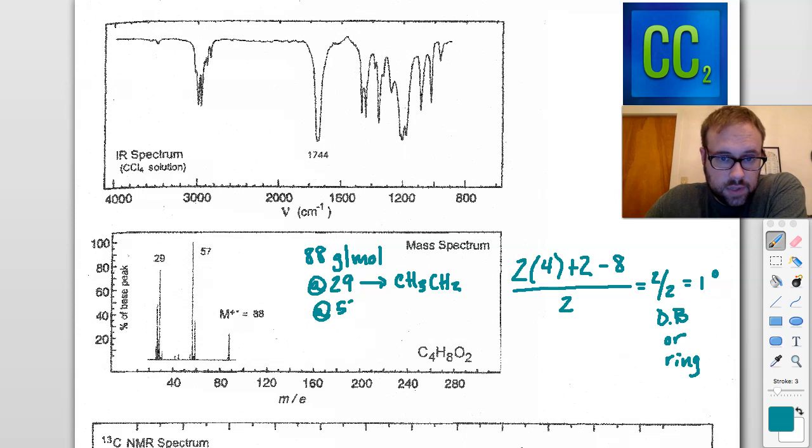Now, we have another one at 57. And one of the most common fragments we see at 57 is an ethyl ketone. So if we already have an ethyl group, an ethyl ketone could certainly be supported with a CH3, CH2, C double bond O. And the fact that we have a C double bond O being proposed here would account for the double bond, the degree of unsaturation.